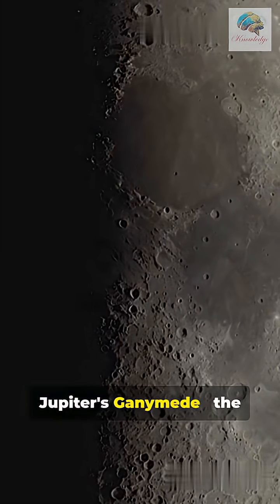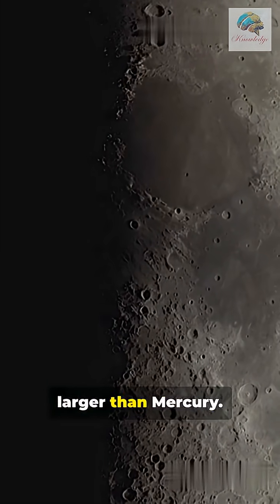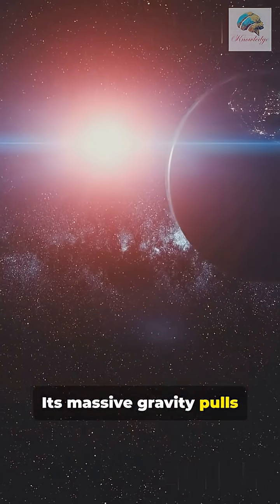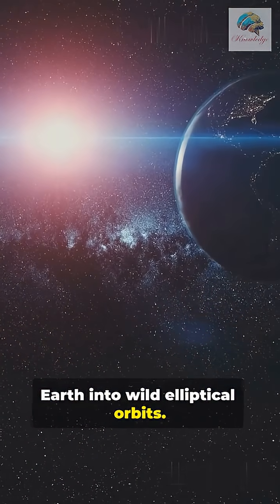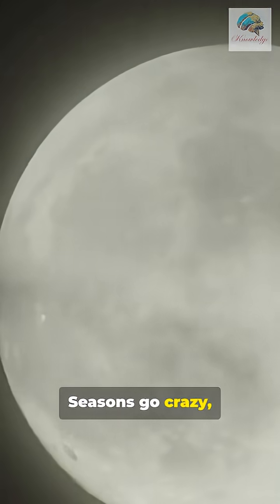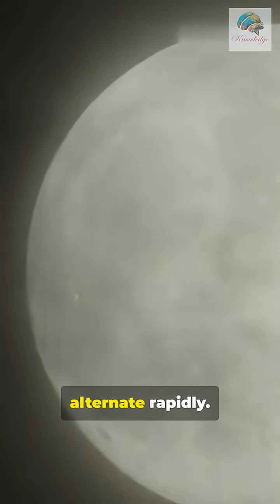Next, Jupiter's Ganymede, the biggest moon, larger than Mercury. Its massive gravity pulls Earth into wild elliptical orbits. Seasons go crazy. Ice ages and heat waves alternate rapidly.